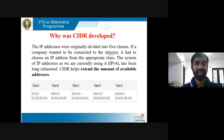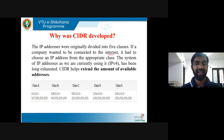IPv4 is divided into 5 classes: Class A, Class B, Class C, Class D, and Class E. Class D is used for multicasting and Class E is reserved for experimental processes. Only Class A, B, and C are used.